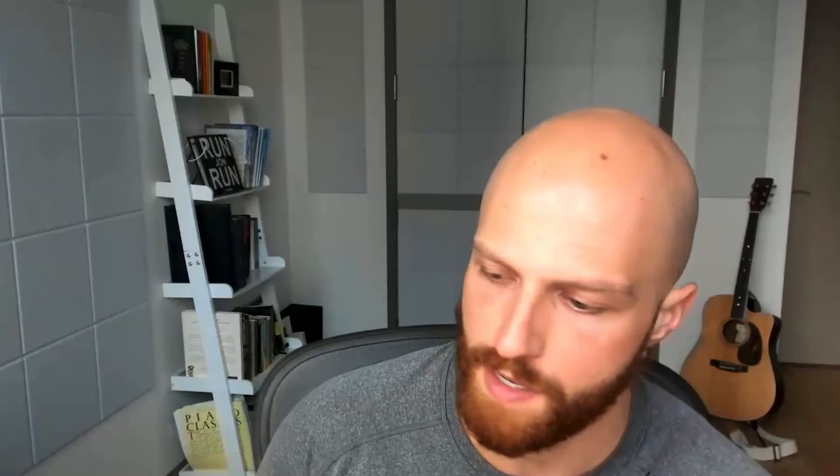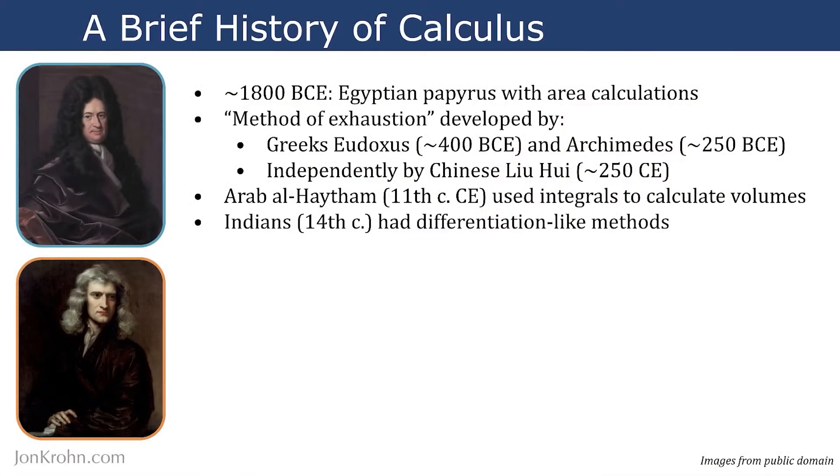Alongside integral calculus, the other main branch is differential calculus. While integrals allow us to calculate the area under curves, differential calculus allows us to go in the opposite direction — to calculate the slope of a curve. Differential calculus can let us go from distance to speed to acceleration, while integral calculus goes the other way, from acceleration to speed to distance, to give a real-world example.